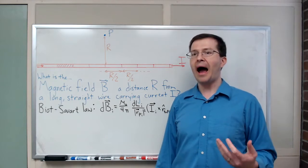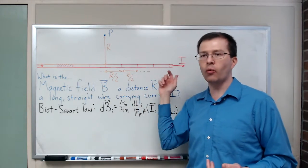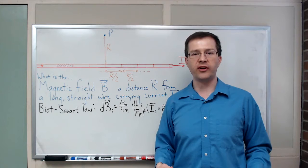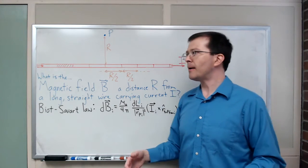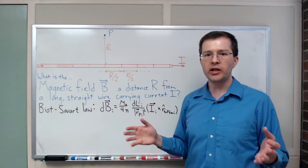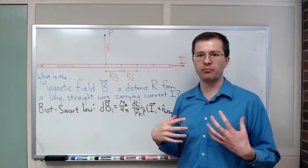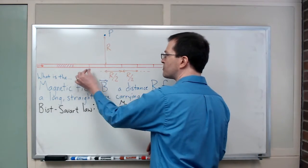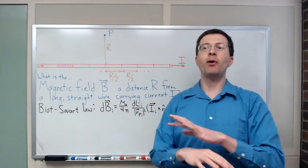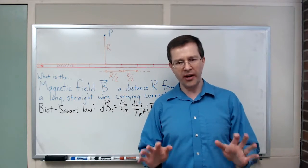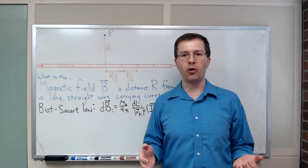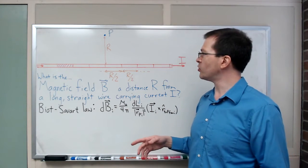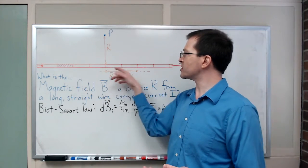The Biot-Savart law tells you how each individual piece of the wire contributes to the overall field at that point. In principle, we know this is really a calculus problem, that I should take the limit as we break up the wire into infinitely small little pieces and add up all those contributions. But for clarity, I want to do an example.